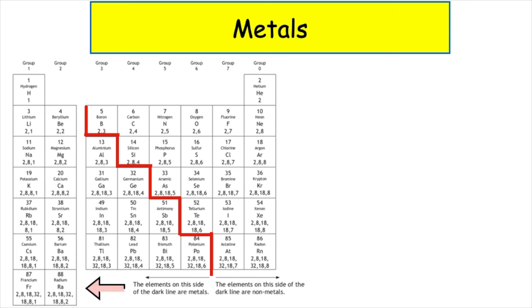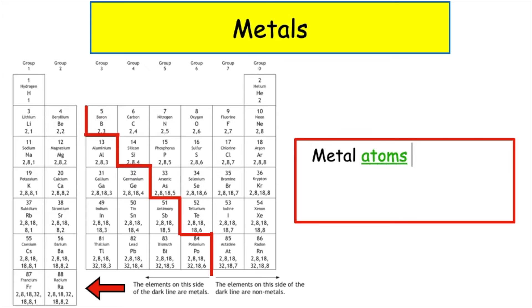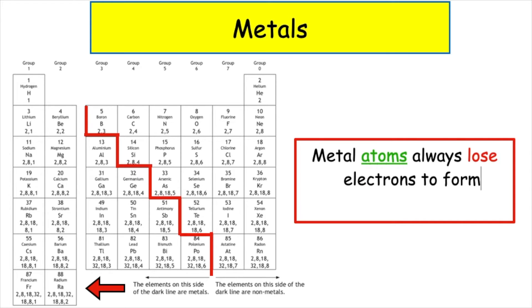Metal elements can be found on the left-hand side of the periodic table. Metal atoms always lose electrons to form positive ions.